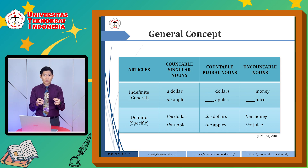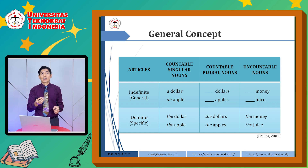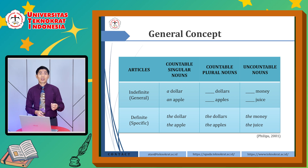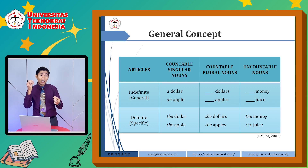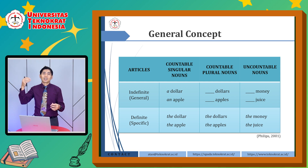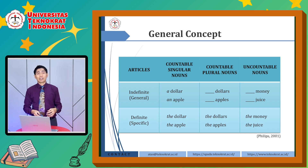What about definite articles? The definite article 'the' is always used — it's used for countable singular nouns, for countable plural nouns, and also for uncountable nouns. So: the dollar, the apple, the dollars, the apples, the money, the juice — comparing these to those examples of indefinite articles just now.